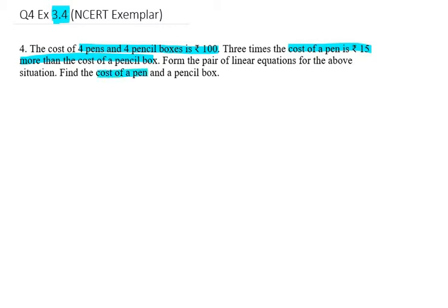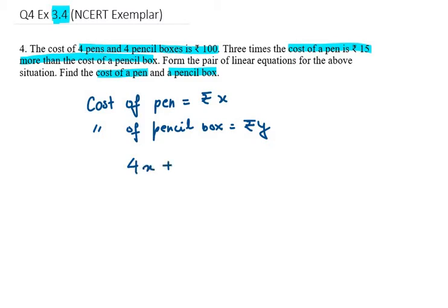Here we need to let cost of a pen as x, cost of pen rupees x, and cost of pencil box as y. Now from the first line we can get one equation. Four pens, that means 4x plus four pencil boxes, that means 4y equals 100.